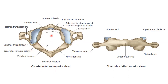The atlas has an anterior arch and a posterior arch. The two arches are united by an anterior tubercle in the midline, and there is a posterior arch which is longer than the anterior and has a posterior tubercle. The posterior arch forms two-fifths of the whole vertebra.